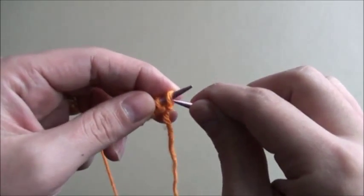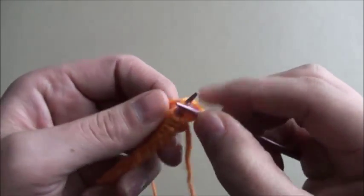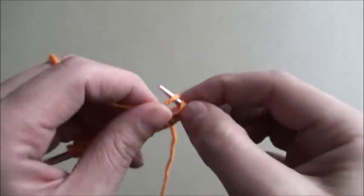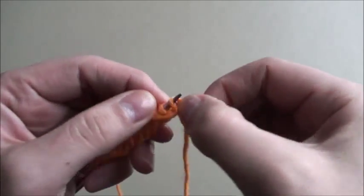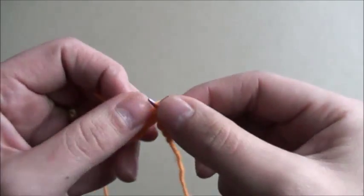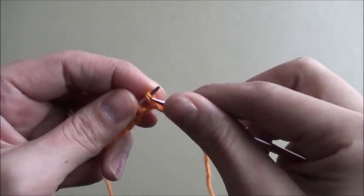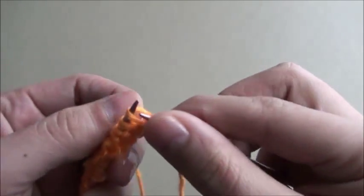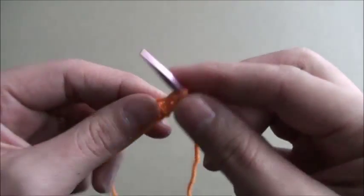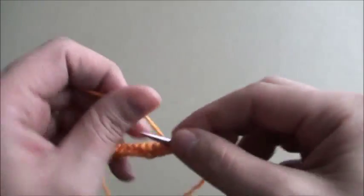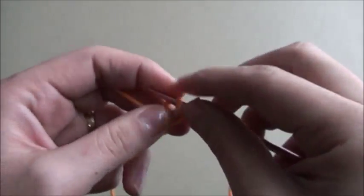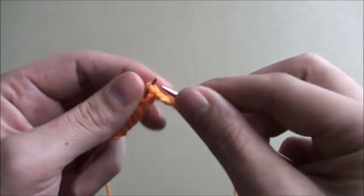For the first row we need to knit 2, then purl 2. Knit 2, purl 2, so we will knit 2 and purl 2 throughout this row.